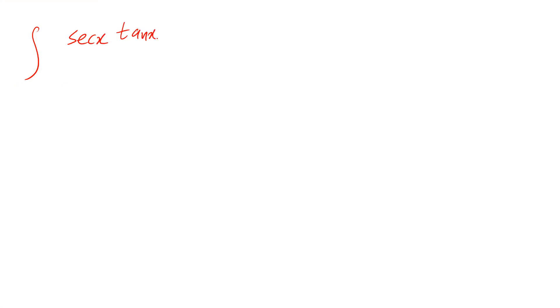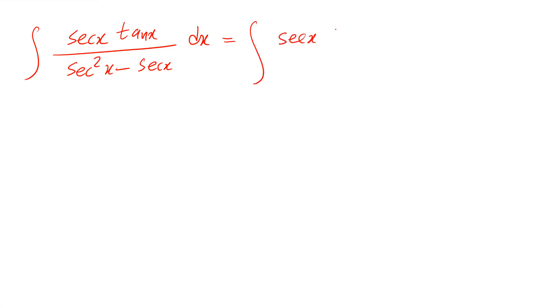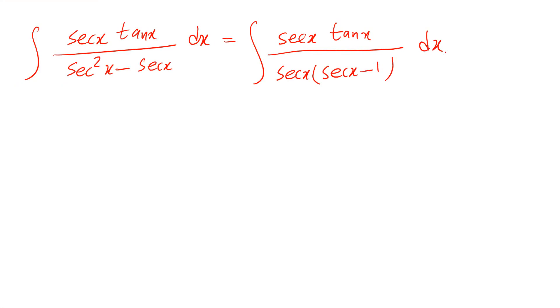Hi, I'm going to show you how to calculate the integral of secant x times tangent x divided by secant squared x minus secant x dx. So this one you can write it as secant x times tangent x divided by secant x times secant x minus 1 dx.